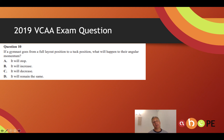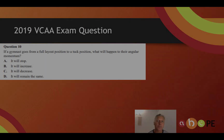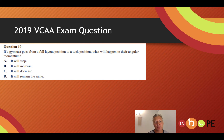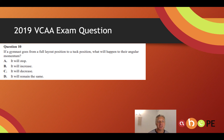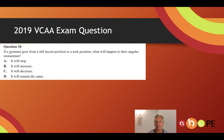In 2019, VCAA had a multiple choice exam question on this topic. A gymnast goes from a full layout position to a tuck position — what happens to their angular momentum? The correct answer is D: it must remain the same. In the full layout position they have a large moment of inertia and small angular velocity; in the tuck position it's the opposite — small moment of inertia but a very high angular velocity.